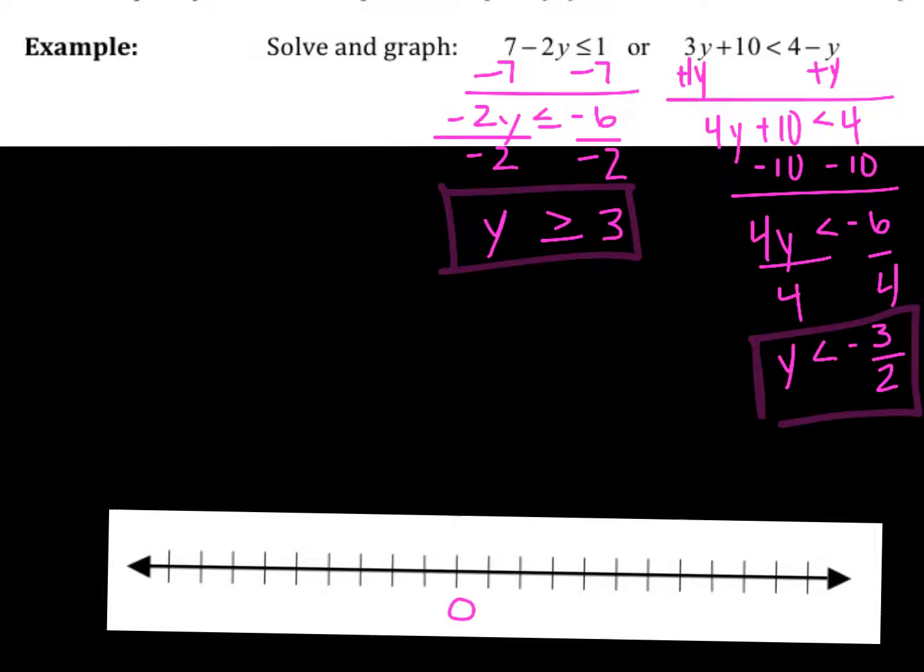So zero, I'm going to go by halves. So one, two, three, four. Negative one, negative two, negative three. So greater than three or greater than or equal to three, I'm sorry. To the right, less than negative three halves or negative one and a half. Just the less than so not including. Everything less than so to the left. And that's it.